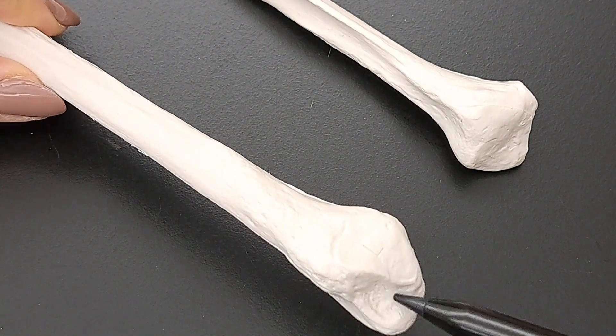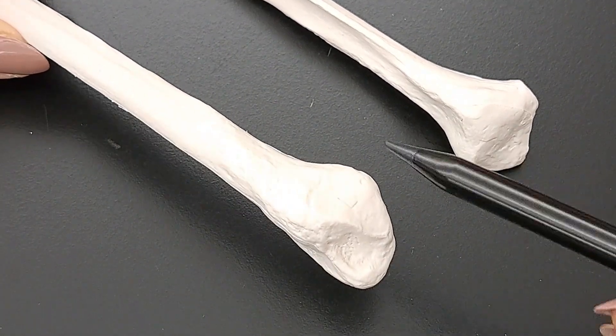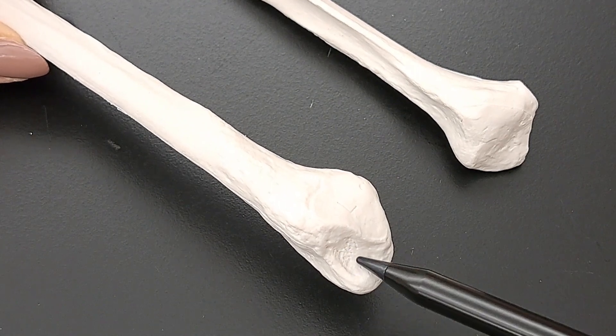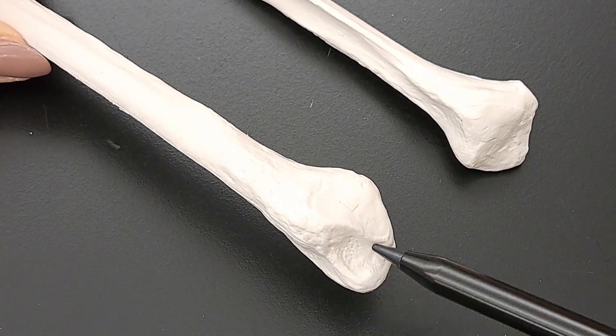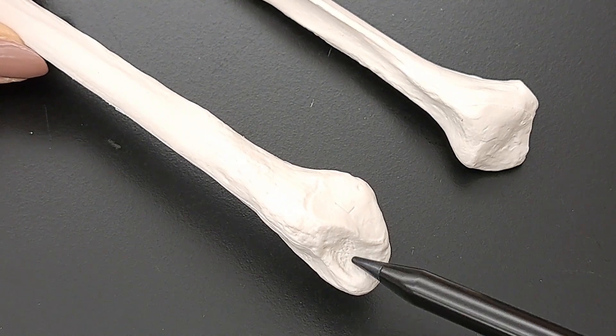We have two articular surfaces because the fibula articulates distally with two bones. One articulation is with the tibia only. And the other articulation is with the tarsal bone, the talus, at the ankle joint.